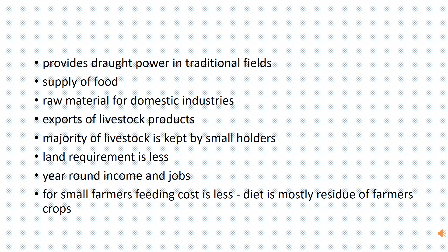Livestock is important for subsistence farmers as well as commercial farmers. It provides draft power to traditional small-scale subsistence farmers who cannot afford machinery, so they use their animals to help them with farm processes such as ploughing. Waste from their animals is used as fertilizer, and parts of crops not used by human beings are used as fodder for the animals, so it's not very expensive. They also get milk, and if they have chickens, they get eggs.